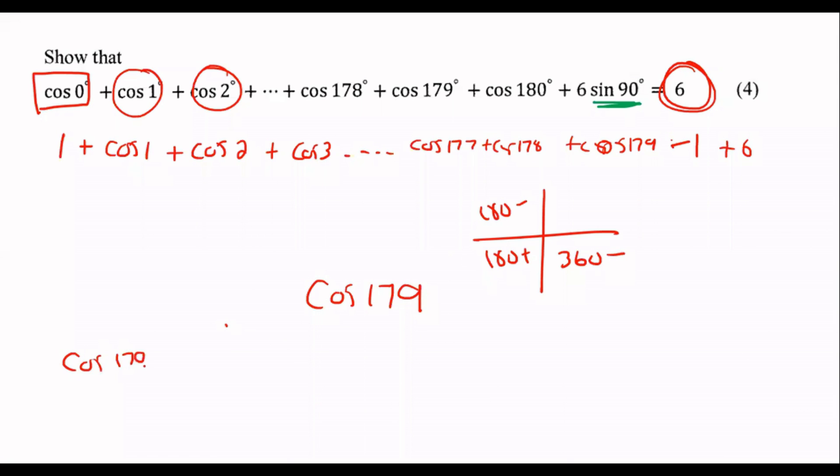So we know that cos of 179 is the same as cos 180 minus 1 because that's 179. So we've written it like this. Now the answer becomes cos of 1 but because cos is negative here you put a negative in the front so it becomes negative cos 1.